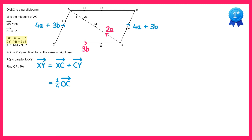Then looking at the next ratio, it's 2 to 3. This tells us point Y is 2 fifths of the way along the line CB, so we replace vector CY with 2 fifths of CB. Fortunately we know both OC and CB: 1 quarter of OC is 1 quarter of 3B, and 2 fifths of CB is 2 fifths of (4A plus 3B).